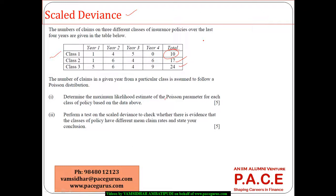The number of claims in a given year from a particular class is assumed to follow a Poisson distribution. So the density function is e to the power of minus lambda, lambda power x by x factorial.